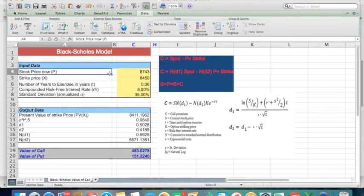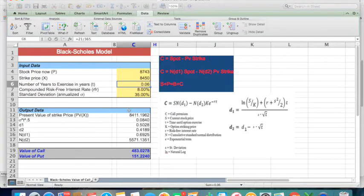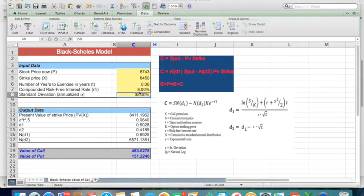So we have put the spot price and the strike price of the option. Now we have to insert the time in years, which is approximately 1.006 years, and the risk-free rate is approximately 8%. And for instance, say the volatility here is 35%—it's just an assumption I'm taking right now.